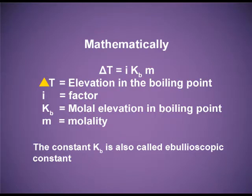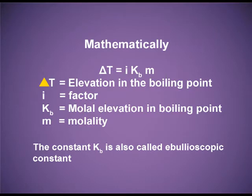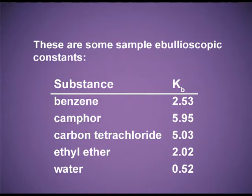Mathematically, ΔT_b equals i × K_b × m. Here ΔT_b is the elevation in boiling point, i is van't Hoff's factor which I will explain later, K_b is the molar elevation boiling point constant also known as the ebuloscopic constant with unit Kelvin·kg per mole, and m is molality — the number of moles of solute particles in 1 kg of solvent. Some sample ebuloscopic constants: for benzene K_b is 2.53 K·kg/mol, for camphor it is 5.95, and for water it is 0.52.